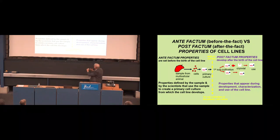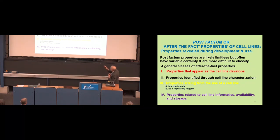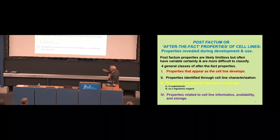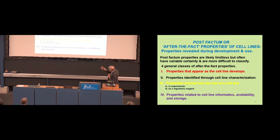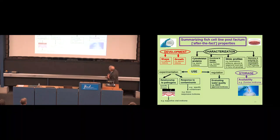So this is just to now illustrate we're changing gears. We've been talking all there on the left. And hey, we're going to move to the right. And I'm just going to very quickly go over this. So for most of my career, I've been concerned with the things on the right. So post-factum properties are likely limitless but often have variable certainty and are more difficult to classify. And so I've done it this way. Properties that appear as the cell lines develop. Properties identified deliberately through cell line characterization. And then properties that arise from the use of the cell line, say in experiments or as a regulatory agent. And then properties related to cell line informatics availability and storage.